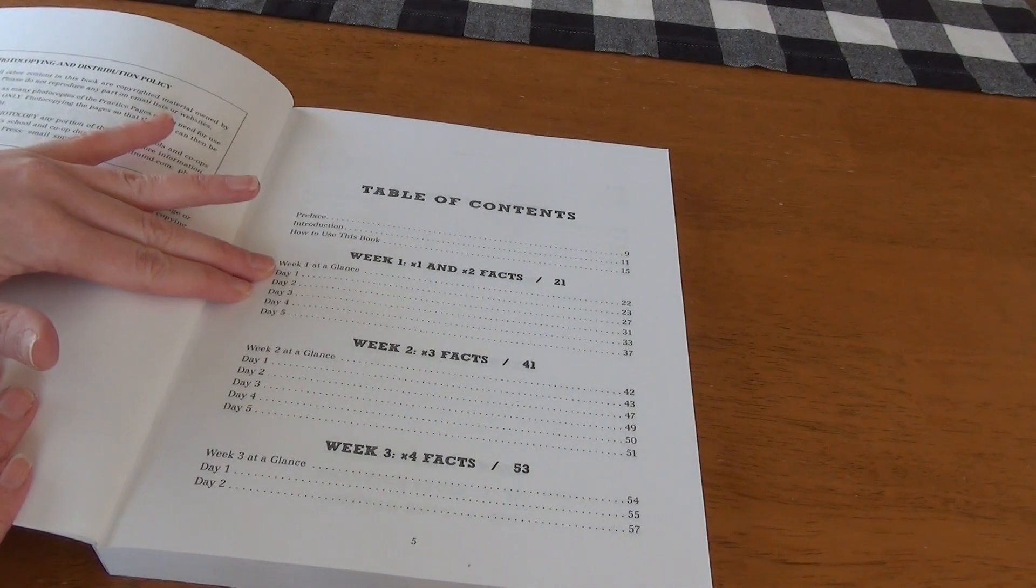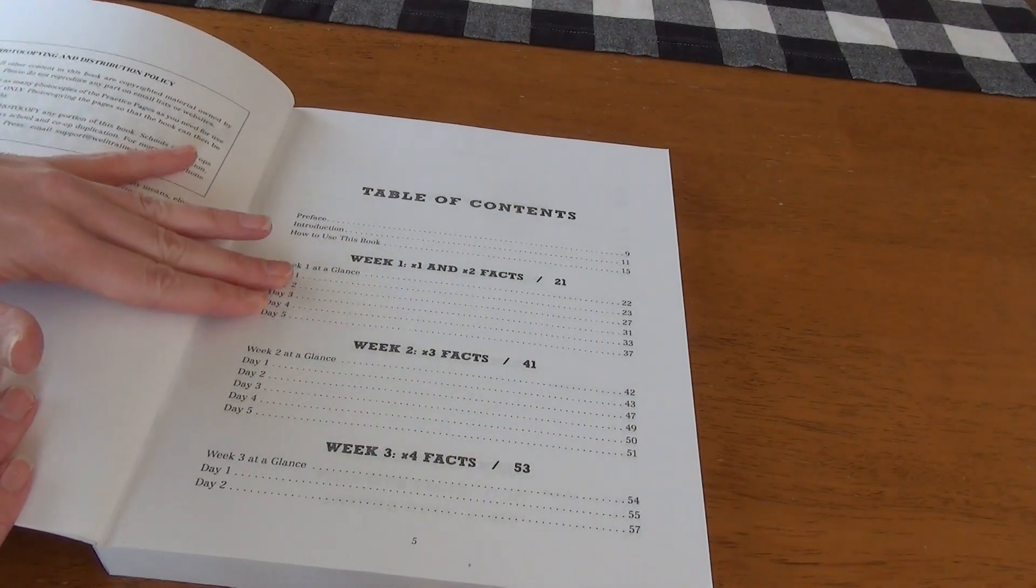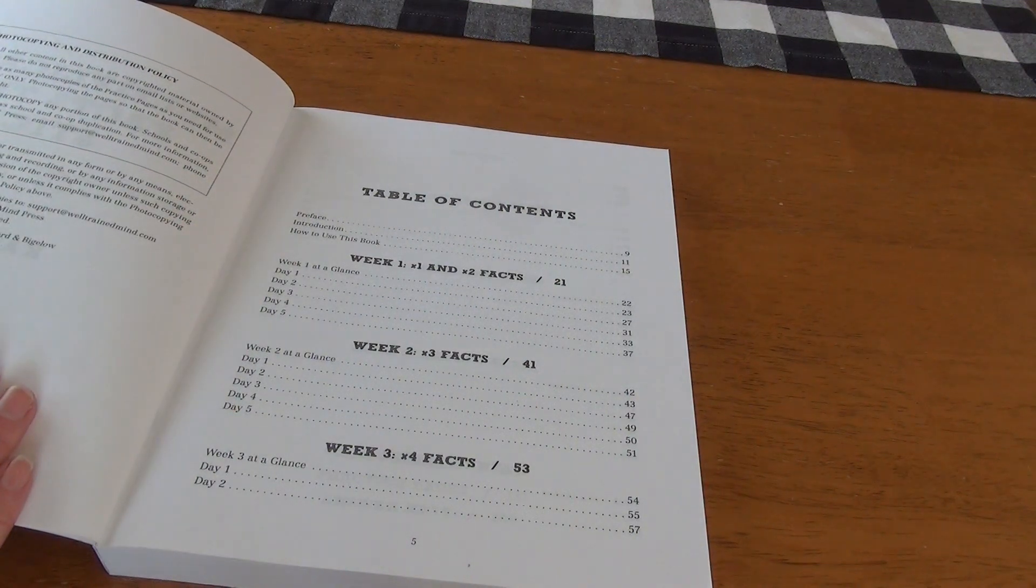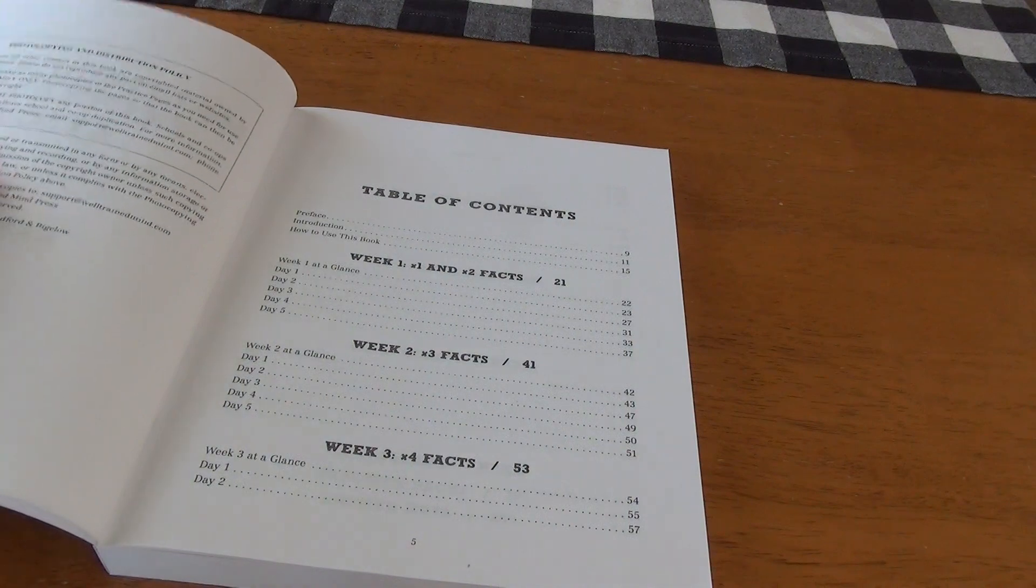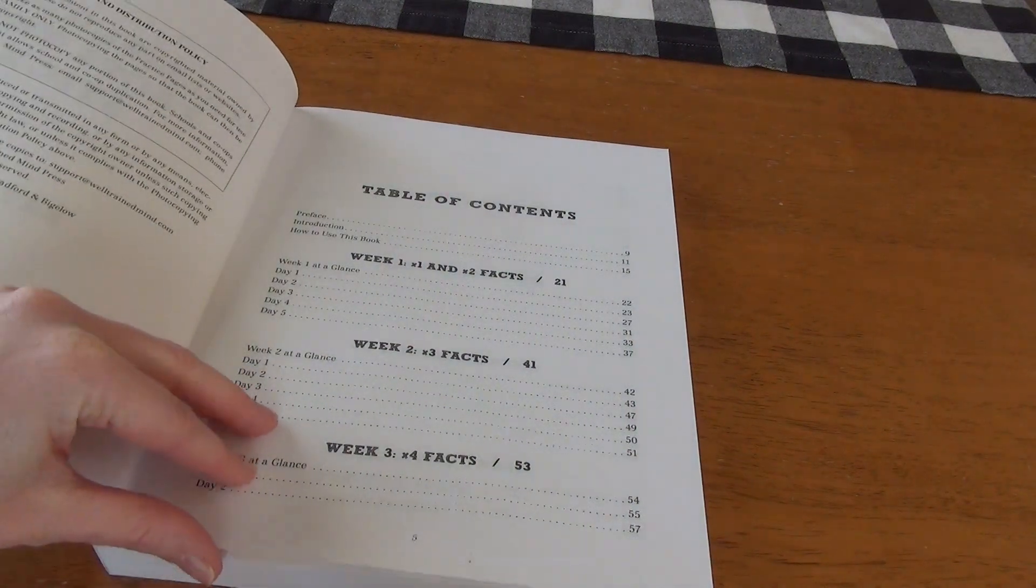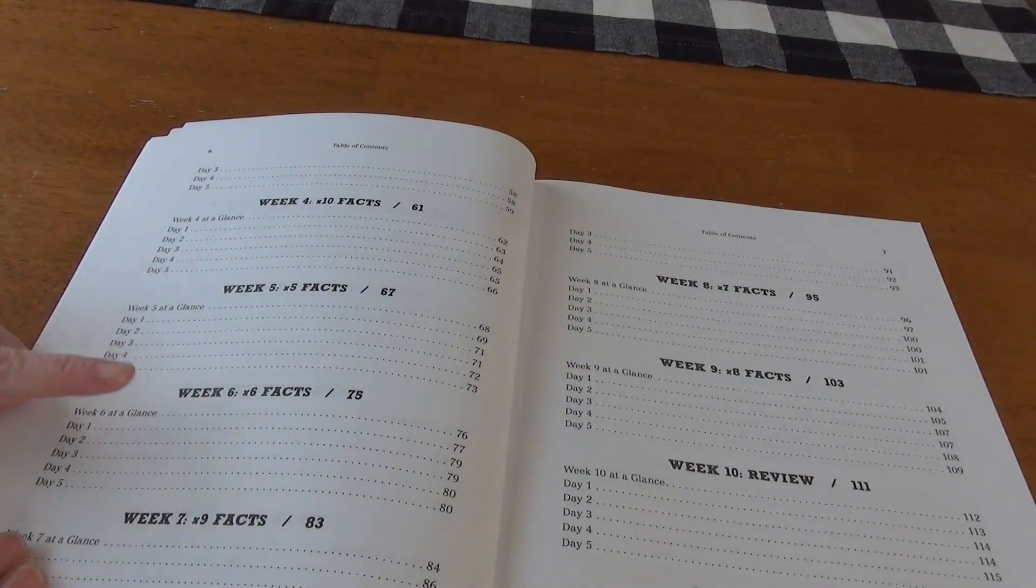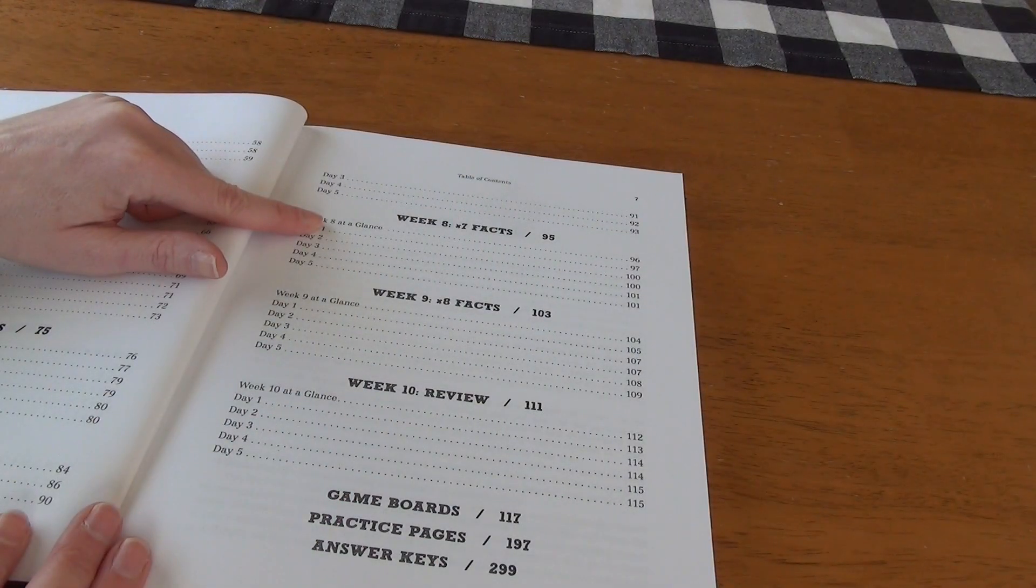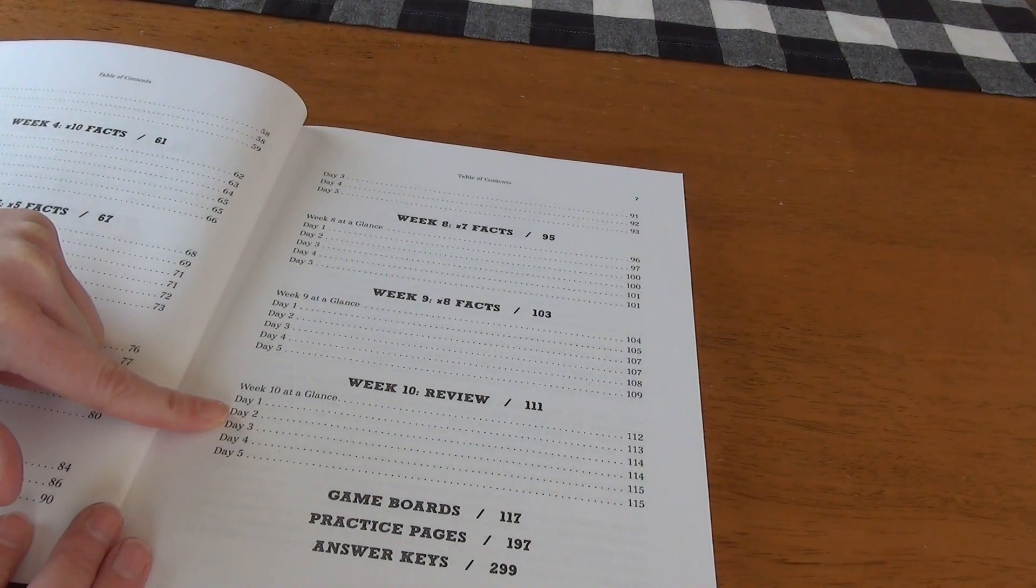The first week, we actually deal with two facts, which is facts one and two. But the rest of the 10 weeks is only dealing with one fact at a time. So week two, we're dealing with three. Week three, number four facts. Then we go to times 10 facts, times five facts, times six, times nine. Week eight, we're on to times seven. Week nine, times eight, and week 10 is review.